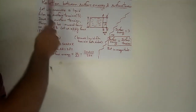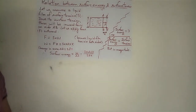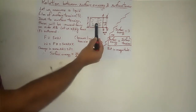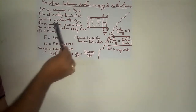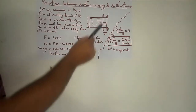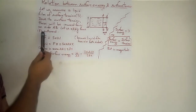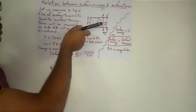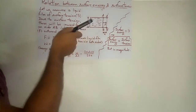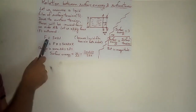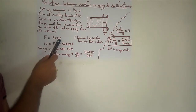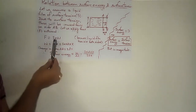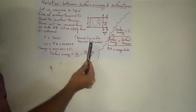We are going to find the relation between surface energy and surface tension. Let us assume a liquid film with surface tension S. Due to this surface tension, there will be an inward force on side AB. Let us apply force F outward, opposite to the surface tension force. This force is equal to surface tension multiplied by length — because surface tension is force per unit length — multiplied by 2, because the liquid film has air on both sides.